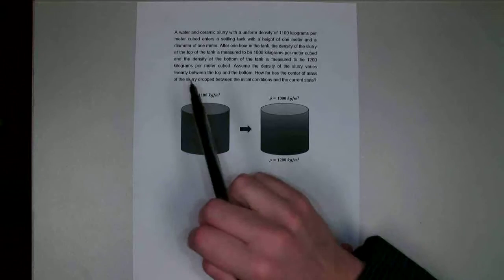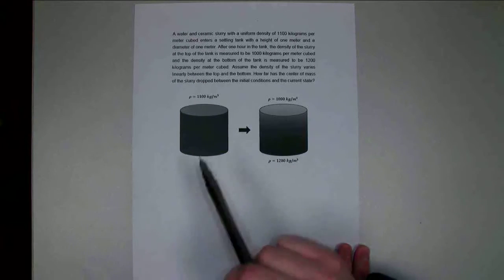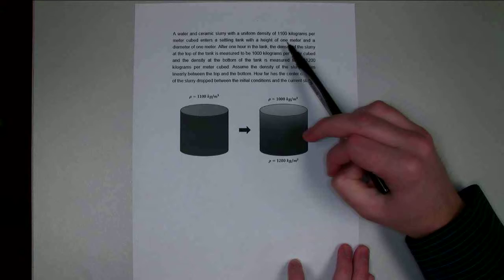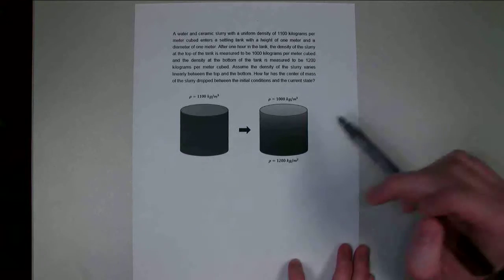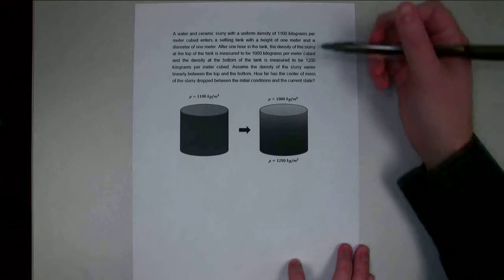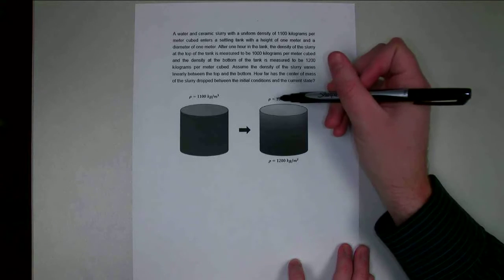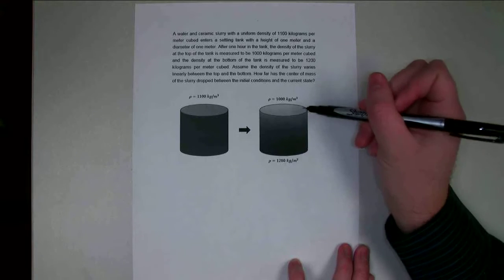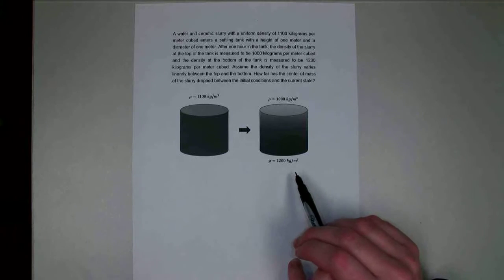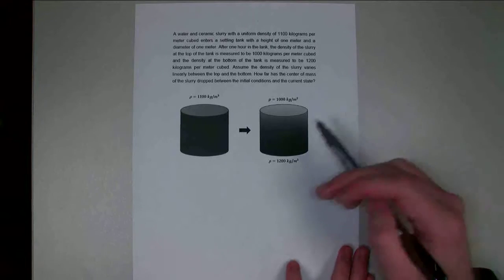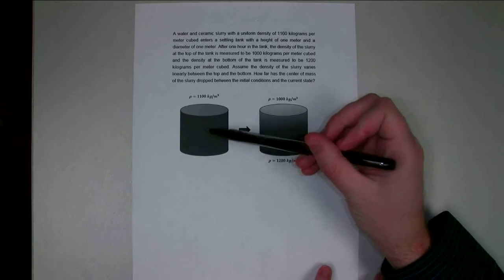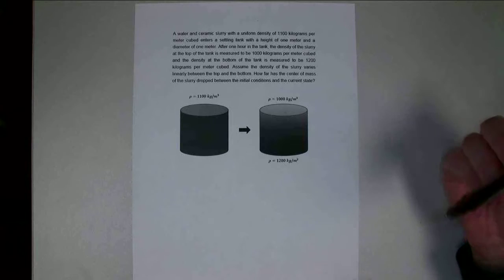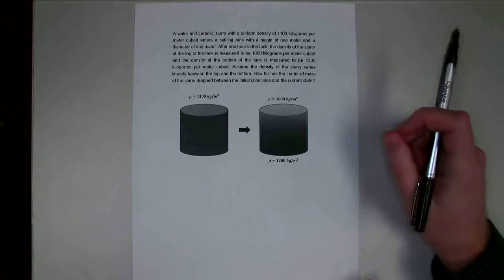What we have here is a settling tank. We've got a water and ceramic slurry with a uniform density of 1,100 kg/m³ in the beginning state. In the ending state, the density varies from 1,000 kg/m³ at the top — basically pure water — to 1,200 kg/m³ at the bottom, as the ceramic particulate settles down.